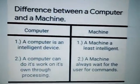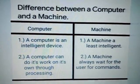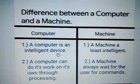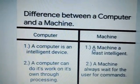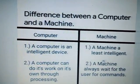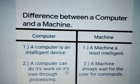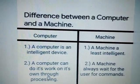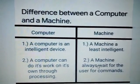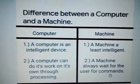Difference between a computer and a machine. Computer: A computer is an intelligent device. Machine: A machine is least intelligent. A computer can do its work on its own through processing. A machine always waits for the user for commands.